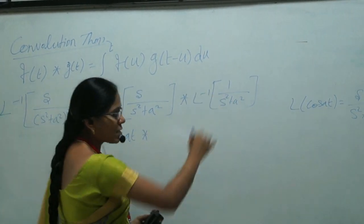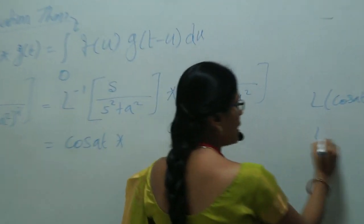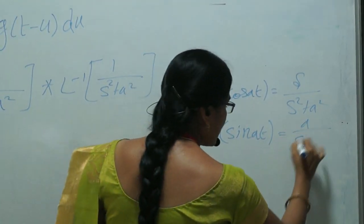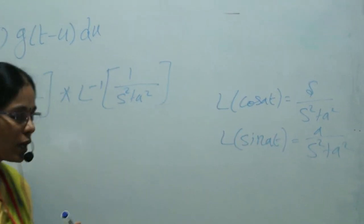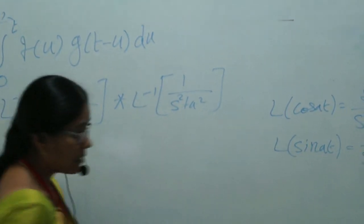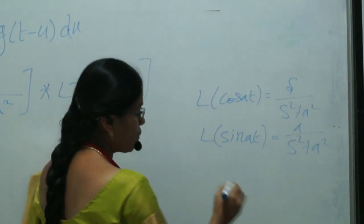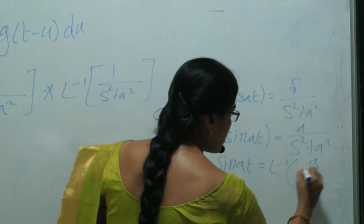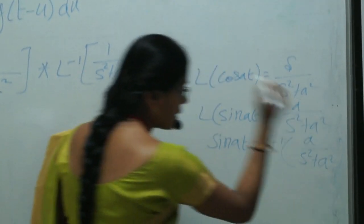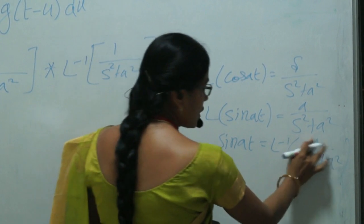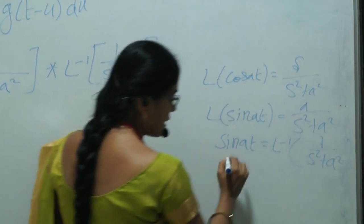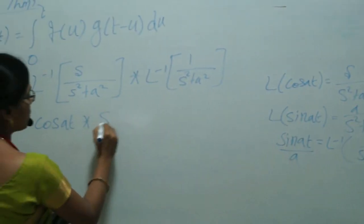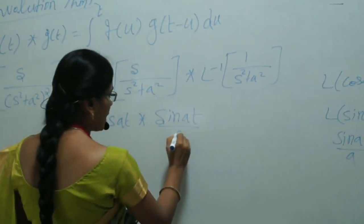Next, L inverse of 1/(s² + a²): we know L{sin(at)} = a/(s² + a²). So sin(at) = L inverse of a/(s² + a²), and since a is a constant, L inverse of 1/(s² + a²) equals sin(at)/a.